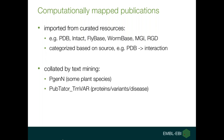There are also eight computationally mapped publications that you can access via this view and only via this view — they won't be included in any downloads, this is specific to the website only. Computationally mapped means that we import additional publications from curated resources. These could be other databases: PDB, which deals with 3D protein structures; IntAct, a protein interaction database; FlyBase, WormBase, MGI, and RGD, which are model organism databases that also do their own curation and provide lists of gene-specific papers to us.